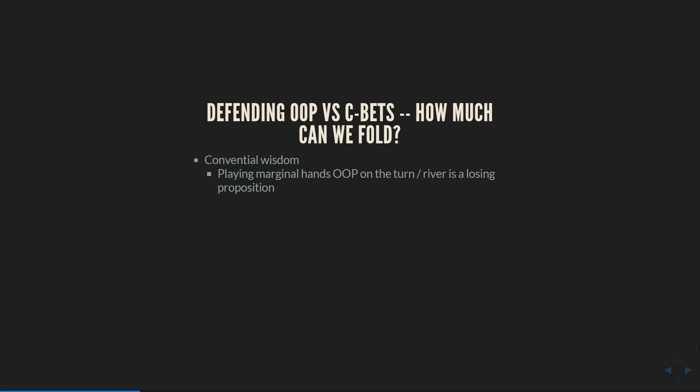Starting maybe five or seven years ago, there was conventional wisdom that playing marginal hands out of position on the turn and river is a losing proposition. At that time, basically everyone folded way too much to c-bets and c-bet way too much in conjunction. This conventional wisdom is not wrong — playing marginal hands out of position is difficult — but people took this advice way too far. I remember when I was coming up playing NL 200, my coach basically just had me start c-betting like 85%, and it just worked because everyone was folding too much. Even the regulars didn't understand that you need to put up some resistance on the flop or you're being super exploitable.